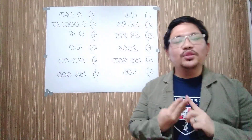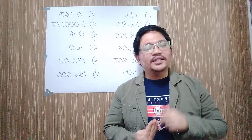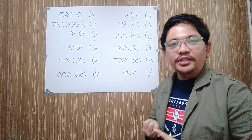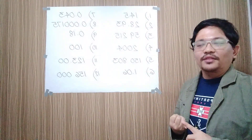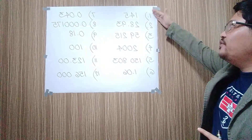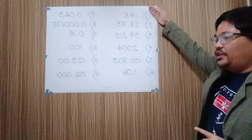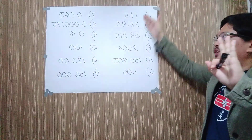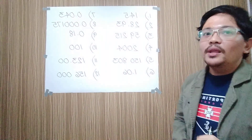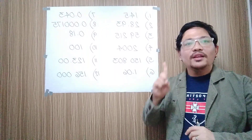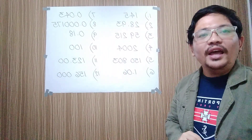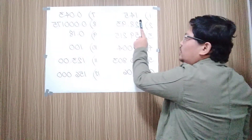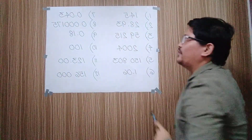Let us start with the first rule. As I have mentioned earlier, the first rule says that all non-zero numbers are always significant. For example, if we have 145, there are three significant figures. Because one is significant, four is significant, and five is also significant. Therefore, example number one has three significant figures.